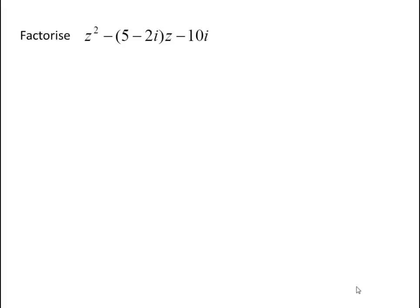Here's our first example. You'll notice that the coefficient of z is a complex number, 5 minus 2i. When there is a non-real coefficient, then we use a technique we call equating coefficients.